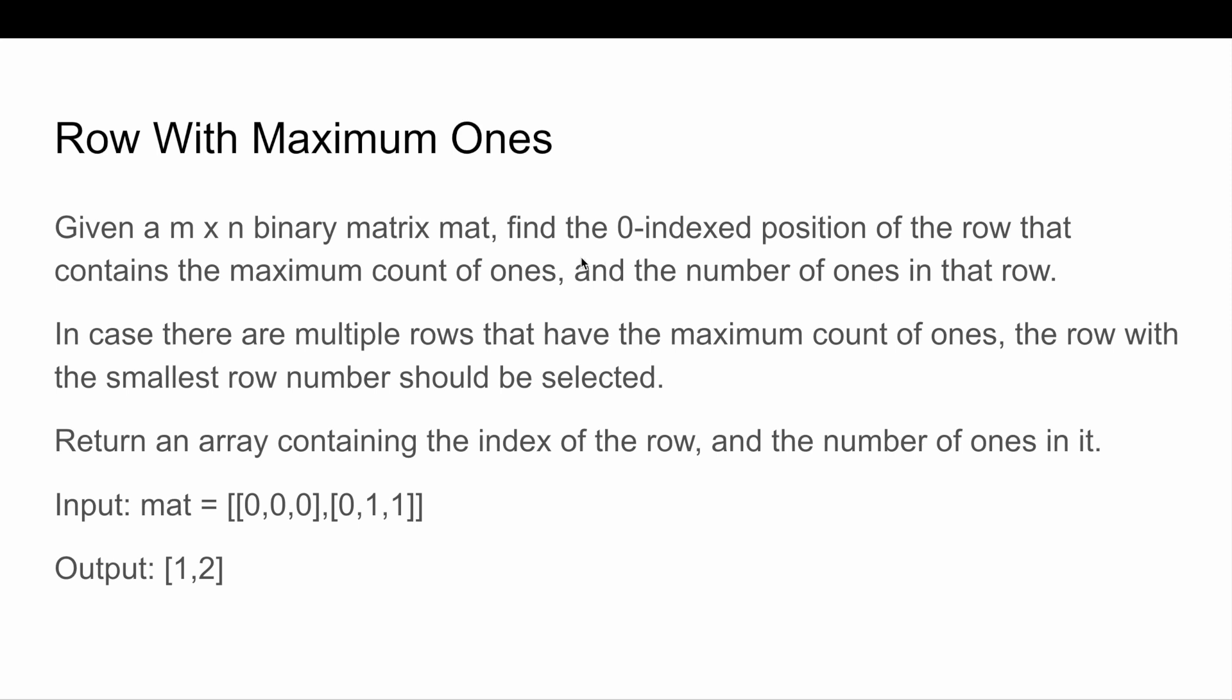Here the input matrix you can see that we have [[0,0,0],[0,1,1]], and the output is [1,2]. As per the given problem, 1 is representing the row and 2 in the output is returning the number of ones in that row. In the given matrix, row number 1 has number of ones equal to 2, so the output is [1,2].